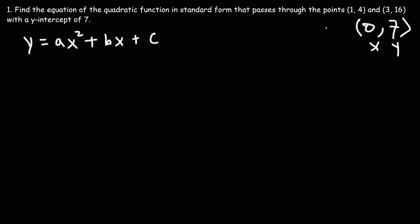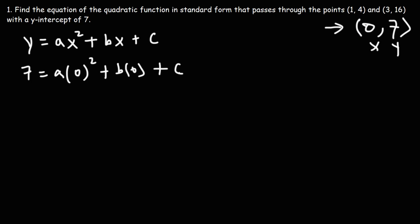Let's start with the y-intercept since that's going to be the easiest. Y is 7, x is 0. So let's replace it accordingly. A times 0 squared is 0, b times 0 is 0. So we can see that c is 7.